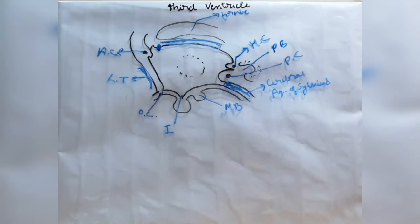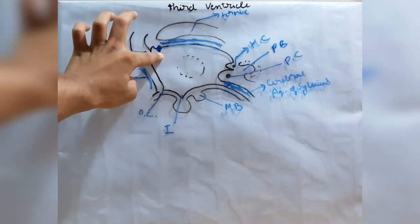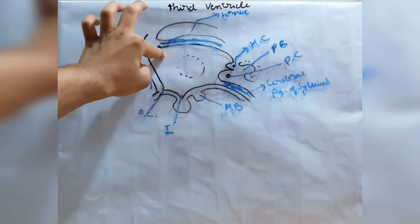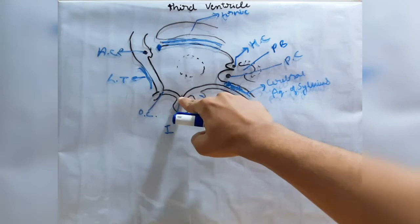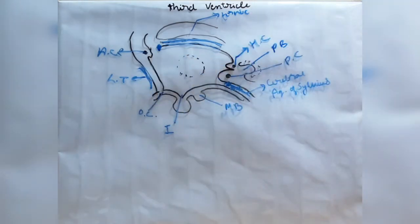Since the foramina of Monroe are on the lateral edge, the corner of the third ventricle itself forms a projection called the bulb of the third ventricle. The cavity of the third ventricle is extended into four extensions called recesses: two placed anteriorly and two placed posteriorly.